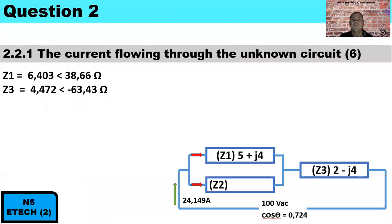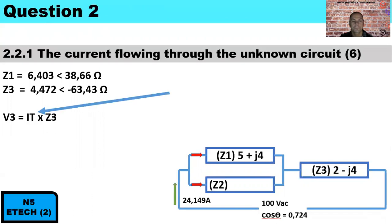To determine the current, we first convert rectangular form to polar form. Z1 converts to 6.403 at an angle of 38.66°, and Z3 converts to 4.472 at an angle of −63.43°. To calculate the volt drop across the series branch Z3, we multiply total current by Z3 in polar form. The current is 24.149 amps, and its angle is found from cos θ = 0.724, giving θ = 43.61°. Multiplying: 24.149 ∠43.61° × 4.472 ∠−63.43° gives the volt drop across Z3 as 107.994 ∠−19.816°.